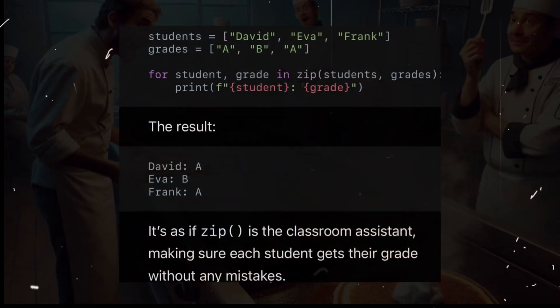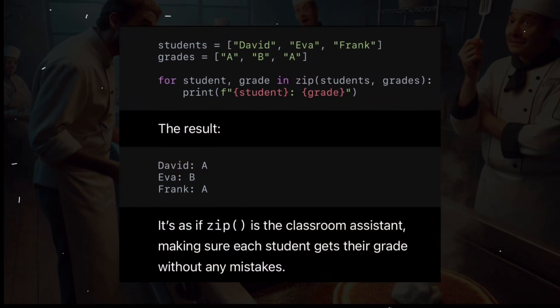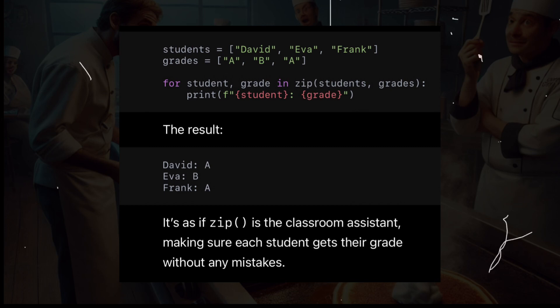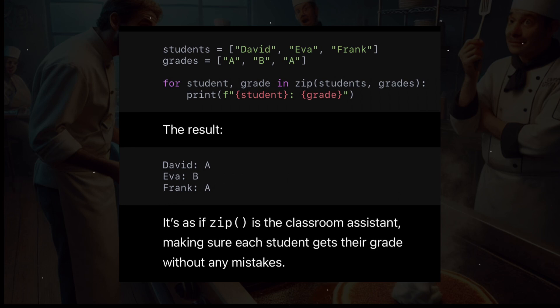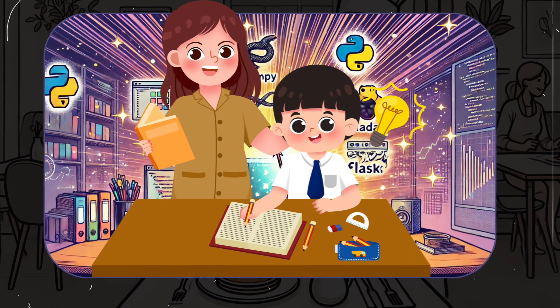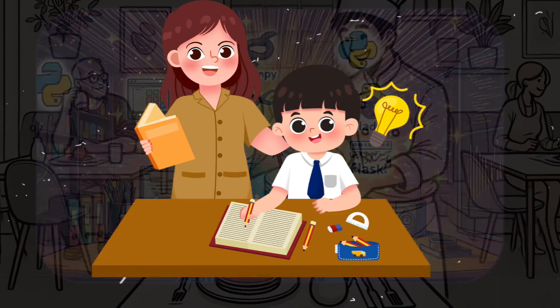students = ['David', 'Eva', 'Frank'] and grades = ['A', 'A', 'A']. For student, grade in zip(students, grades): print(student, grade). The result: David A, Eva B, Frank A. It's as if Zip is the classroom assistant, making sure each student gets their grade without any mistakes.